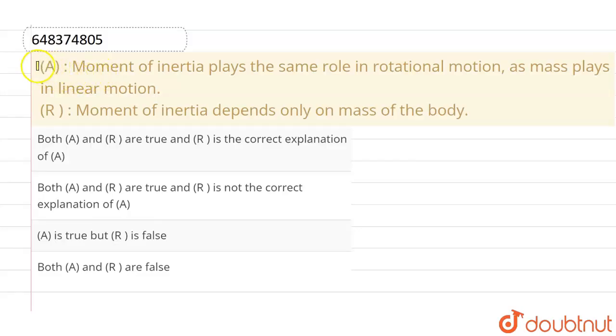Hello everyone. If you talk about this question, the given question is the assertion is given as moment of inertia plays the same role in rotational motion as mass plays in linear motion. And the given reason is that moment of inertia depends only on mass of the body.